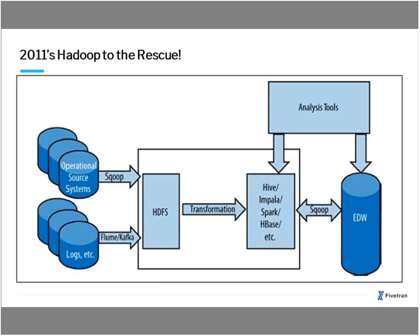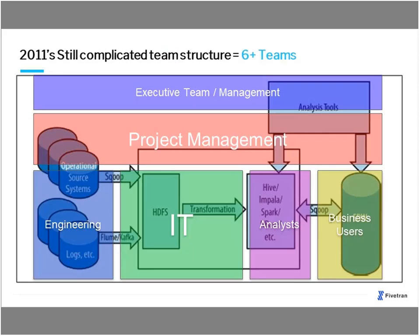The Hadoop stack looked like this: you have your operational source systems and logs, load into Hadoop, transform either within Hadoop or using tools like Informatica, then use Hive or Spark to pump data into your data warehouse and analytics tools. The stack still had six or more tools, and it hadn't gotten any simpler — it just shifted how companies were doing things. You still had the same number of constituents: executive team, project management, engineering, IT, analysts, and business users.